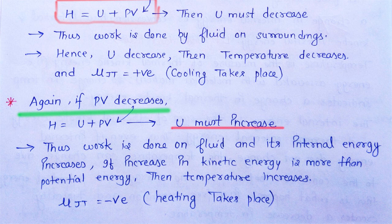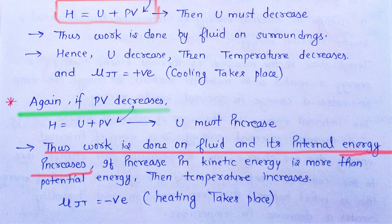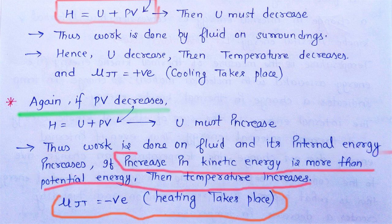Case 2: अगर pv decrease होता है यानी work done on fluid होता है, तो h constant रहने के लिए u को increase होना होगा। Thus work is done on fluid and its internal energy increases। Internal energy अगर increase है तो kinetic energy increase होगी — potential energy से जादा — जिसकी वजह से temperature increase होगा, μ_JT negative होगा और वहाँ जो heating effect देखने को मिलेगा उसे Joule heating effect कहते हैं।